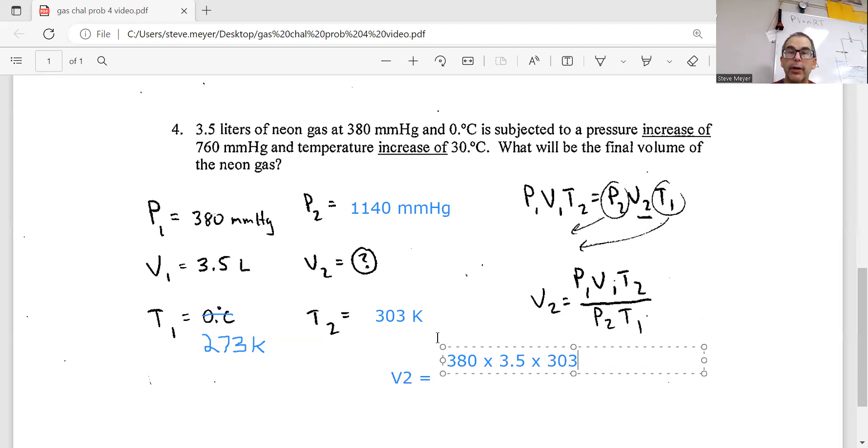Okay, and then I'm going to divide that by, and then I'm going to divide that by, do a little line here, and that's going to be P2, which is 1140. And then times, and then that is going to be 273, and we'll see what that equals.